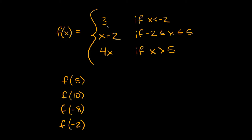So here's our function right here. f of x is equal to these three functions: 3, x plus 2, and 4x. You're going to use the first function, 3, if the number you're evaluating is less than negative 2. If the number is between negative 2 and positive 5 — that is, x is greater than or equal to negative 2 and less than or equal to 5 — then you use x plus 2. And lastly, if the number is bigger than 5, you use 4x.